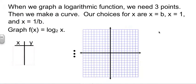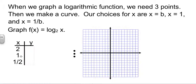They're also going to ask us to do some graphing. We get some x's and figure out the y's to go with them. There are three basic points that we're interested in. Whatever base they gave us for our log, we want x equals that base to be one of our choices. x equals 1 to be a choice. And x equals the reciprocal of our base to be a choice. So for log base 2 of x, b is 2, so our choices are x equals 2, x equals 1, and x equals 1/2.